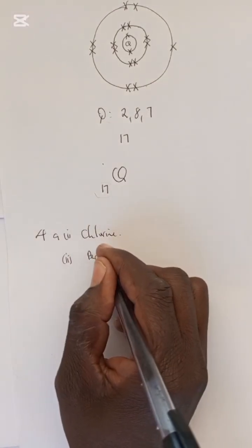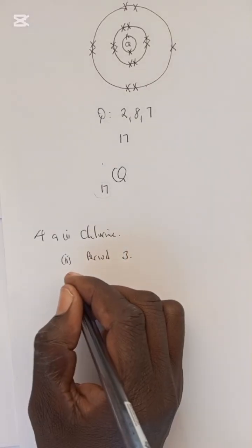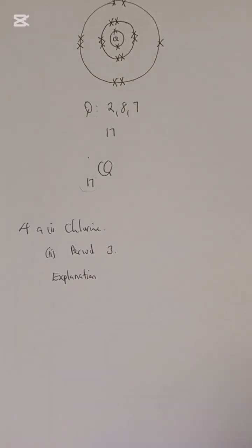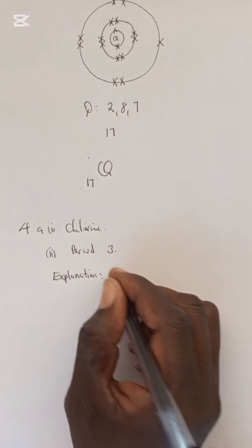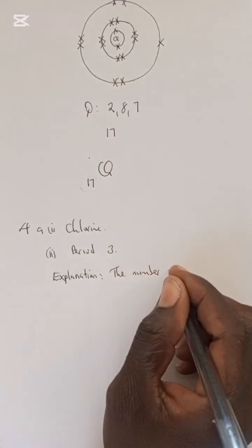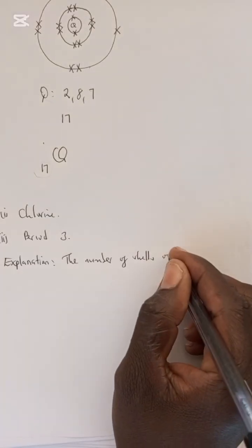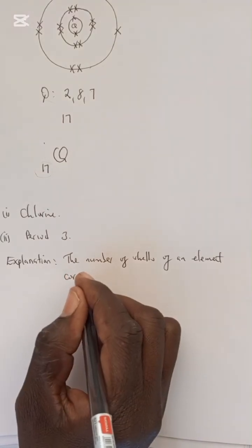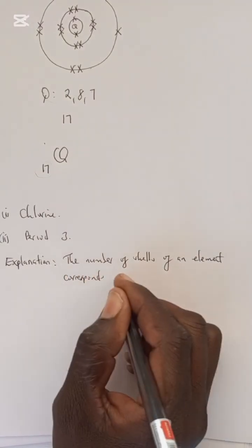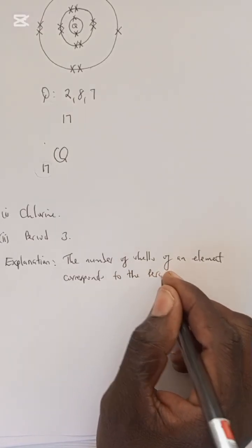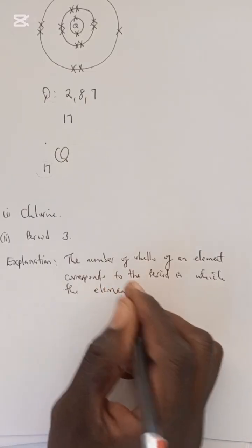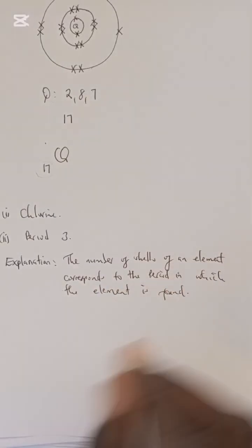The explanation is that the number of shells corresponds to the period in which the element is found. So the number of shells of an element or atom corresponds to the period in which the element is found. That's the criteria we use.